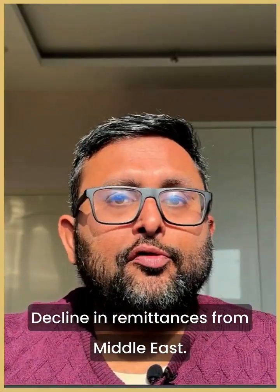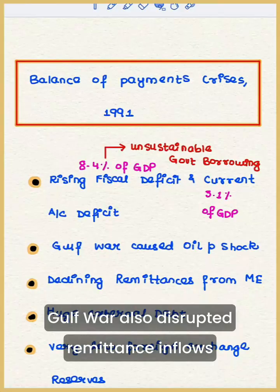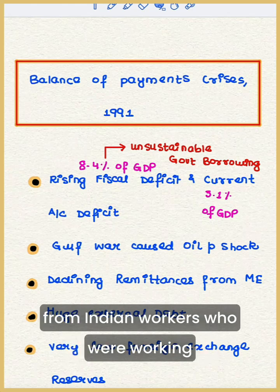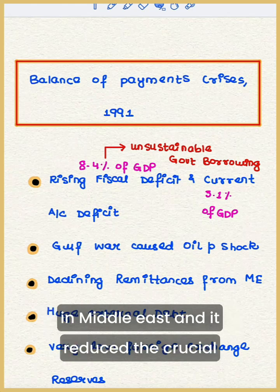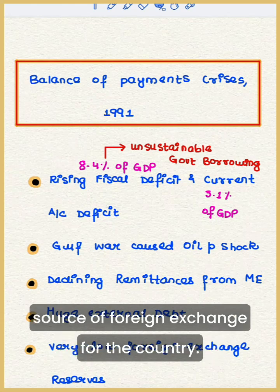There was also a decline in remittances from the Middle East. The Gulf War disrupted remittance inflows from Indian workers who were working in the Middle East, and it reduced a crucial source of foreign exchange for the country.